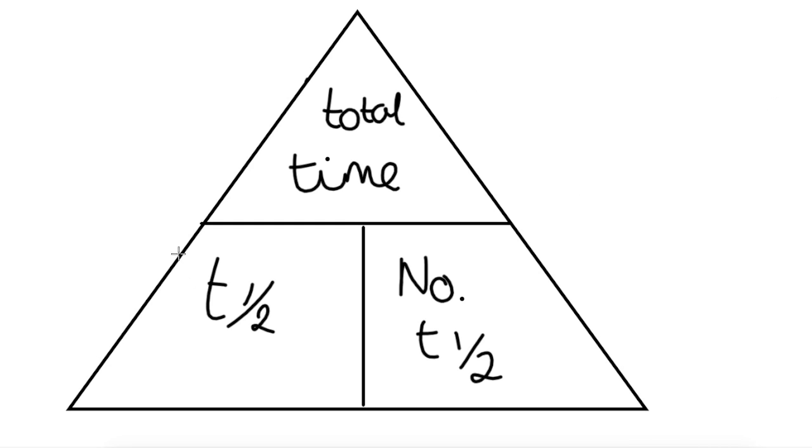You can use this triangle here to calculate different values. At the top, we have the total time that you're interested in. At the bottom left, we have t½, which is half-life. And at the bottom right, we have number of half-lives. If you are used to using triangles, this might help you to calculate the half-life questions. I'll put this triangle in the top corner of all of the examples, so it's there throughout the video.